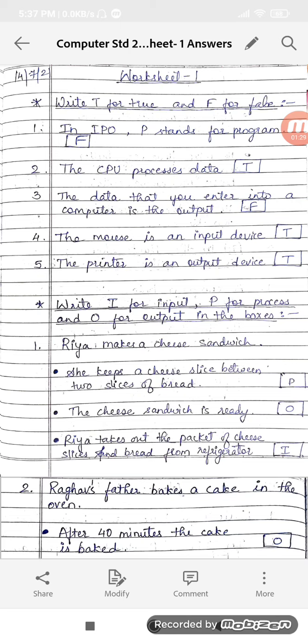First one, she keeps the cheese slice between two slices of bread. The cheese sandwich is ready. Ria takes out the packet of cheese slices and bread from refrigerator. So the input will be Ria takes out the packet of cheese slices and bread from refrigerator.